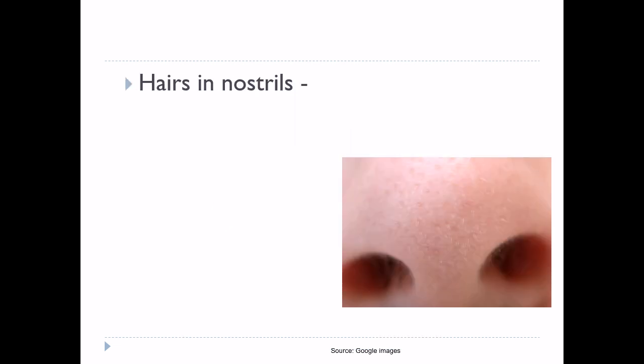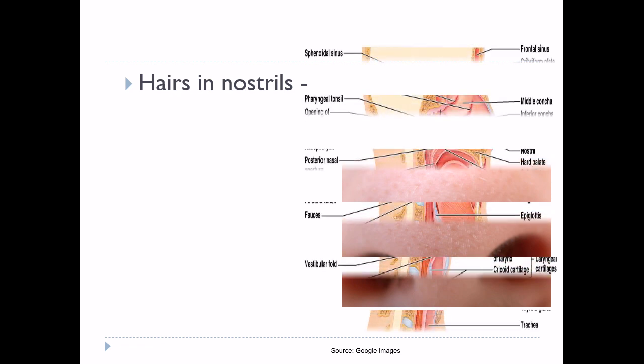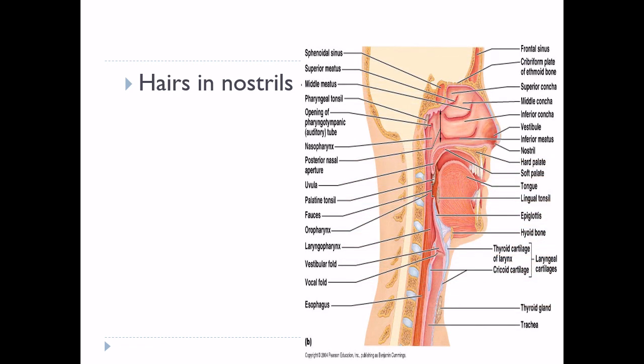First, filtration takes place in our hairs. Hairs at the entrance of the nostril are important for filtration function. Much more important is removal of particles by turbulent precipitation. Every time air which we inhale hits one of the obstructions — the conchae in the nose: superior, middle, and inferior conchae — all turbinates are there.